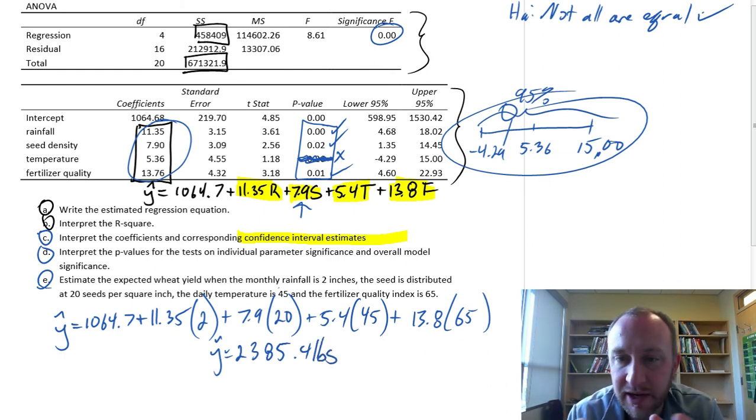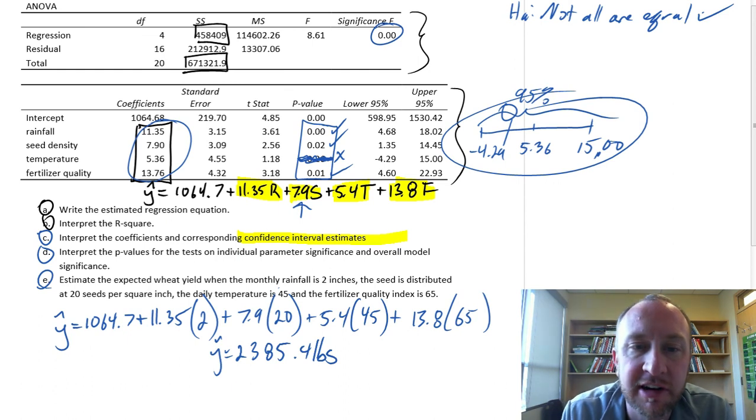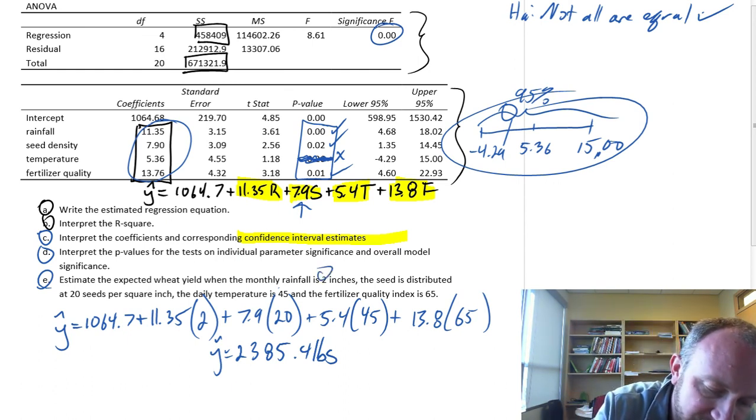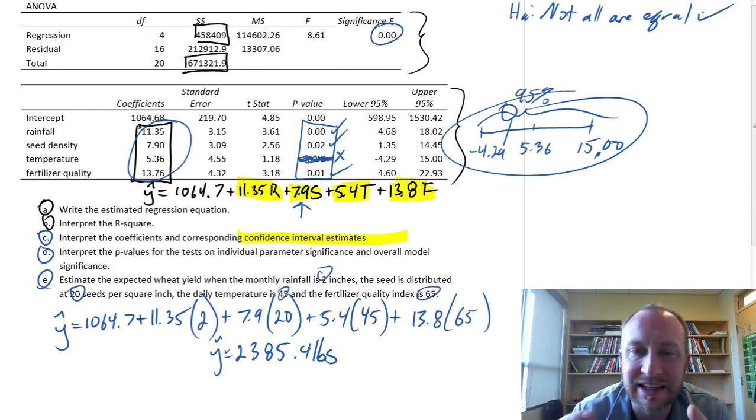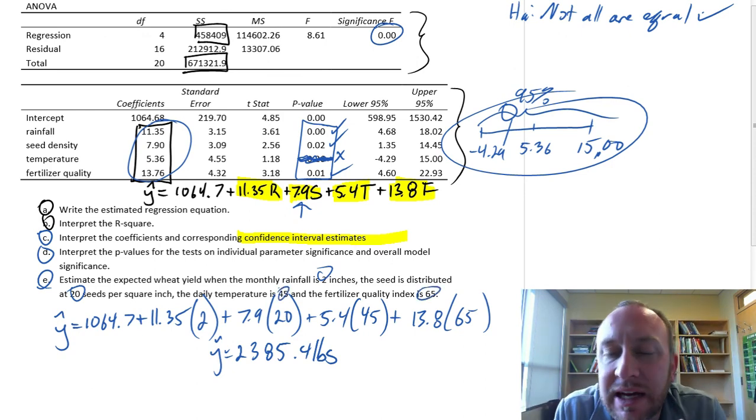So there we have it. With this estimated regression equation and given these values for all of our independent variables, we estimate that in those conditions we can expect an average wheat yield of 2385.4 pounds. So I think that's everything. We've got A, B, C, D, and E are covered.